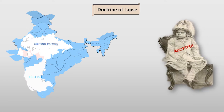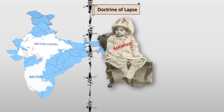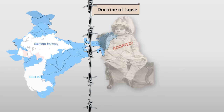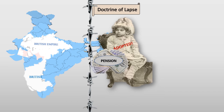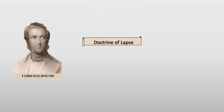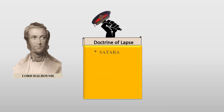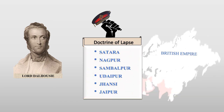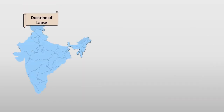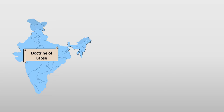The adopted son of any king was not allowed to rule the kingdom and was eligible to receive only pensions. Therefore, Dalhousie used this policy as a political weapon against princely states like Sitara, Nagpur, Sambalpur, Udaipur, Jhansi and Jaipur, and merged them with the British Empire.